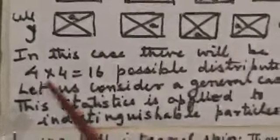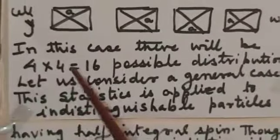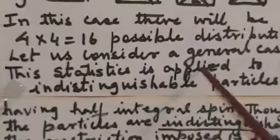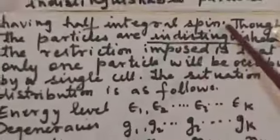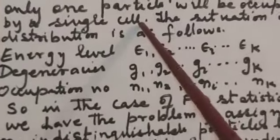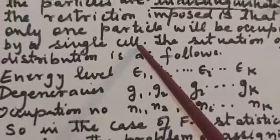In this case there will be 4 into 4, 16 possible distributions. Let us consider a general case. This statistics is applied to indistinguishable particles having half integral spin. Though the particles are indistinguishable, the restriction imposed is that only one particle will be occupying a single cell.